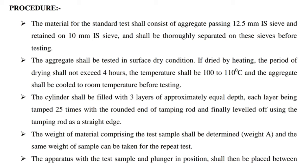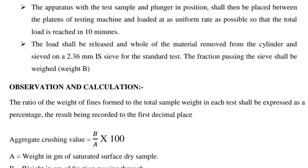The weight of material comprising the test sample shall be determined as weight A, and the same weight of sample can be taken for the repeat test. The apparatus with the test sample and plunger in position shall then be placed between the platens of the testing machine and loaded at a uniform rate so that the total load is reached in 10 minutes. The load shall be released and all material removed from the cylinder and sieved on the 2.36 mm sieve. The fraction passing the sieve shall be weighed as weight B.